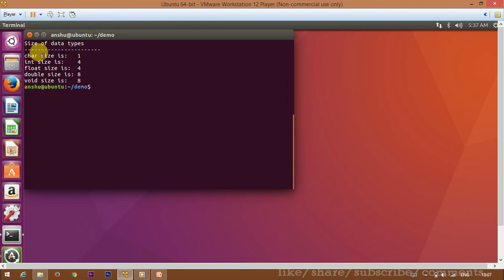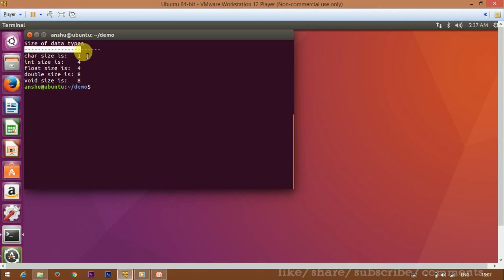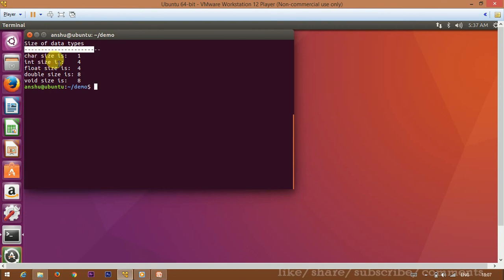See, first system clear happened. The terminal cleared. Then size of data types, then the straight line is there. Then what? Char size is 1, meaning 1 byte. Int size is 4 bytes. Float size is 4 bytes. Double size is double precision, so 8 bytes. Void is generic type, that is 8 bytes. We have not discussed what void means.